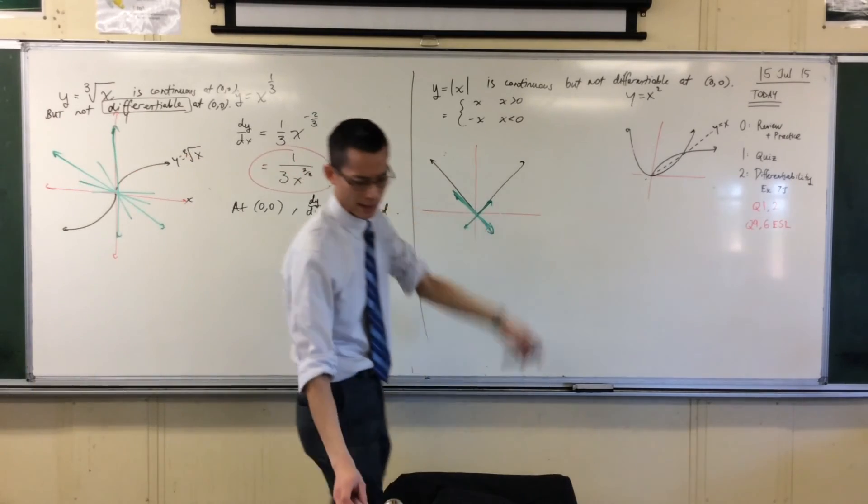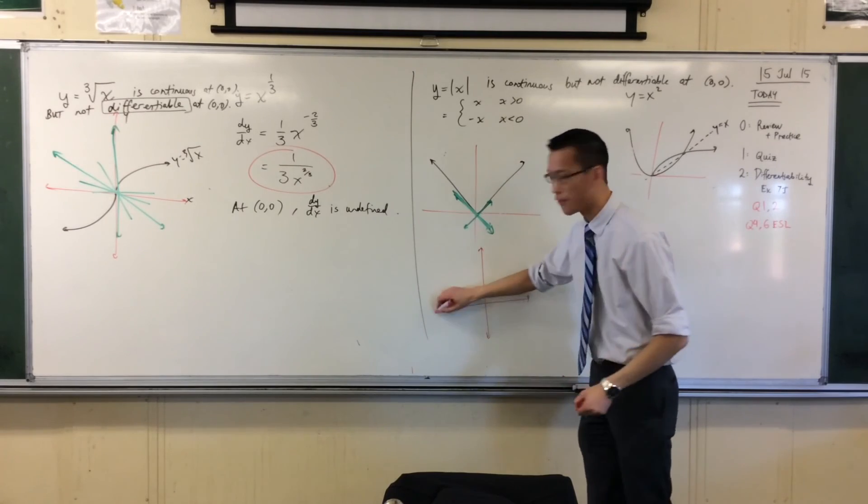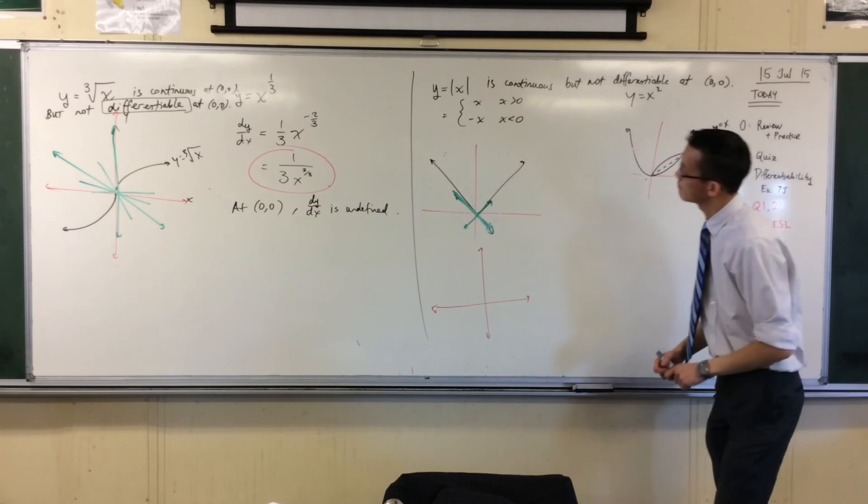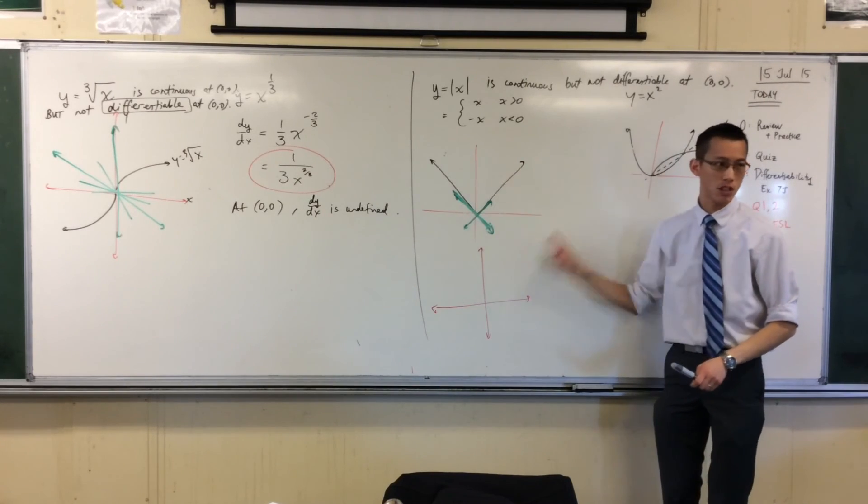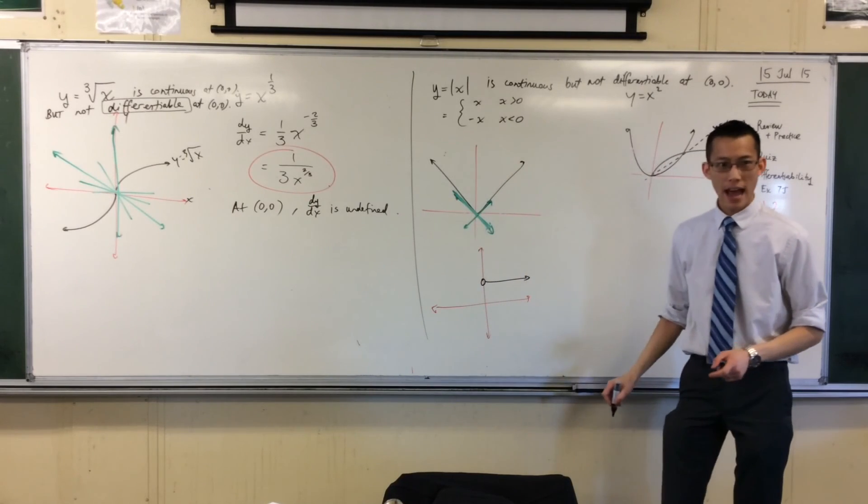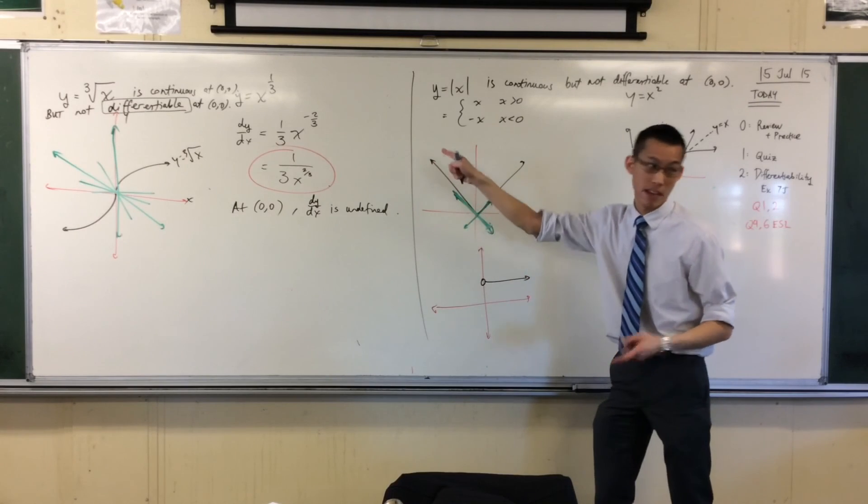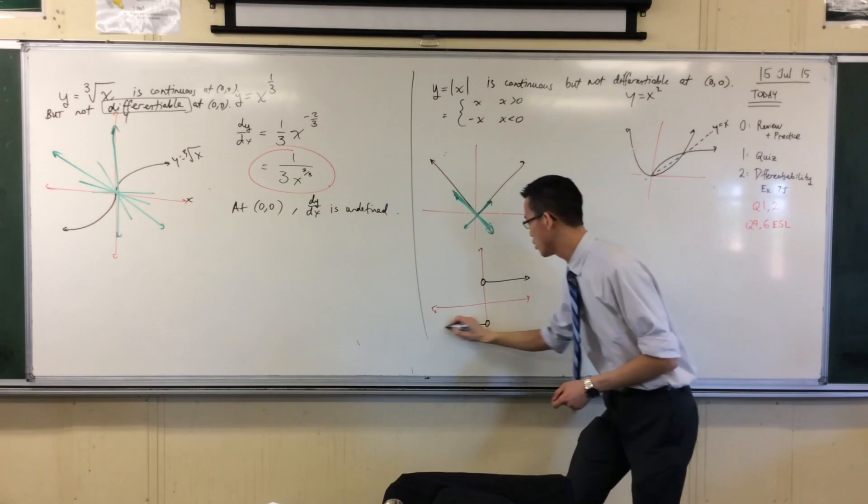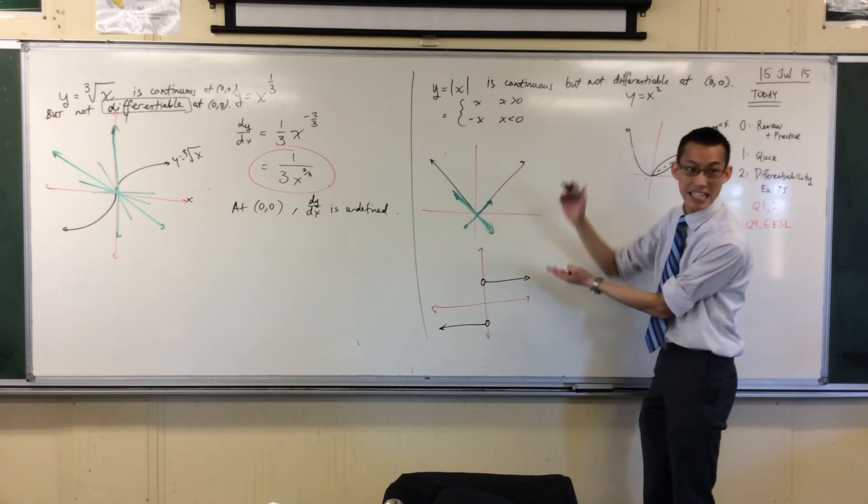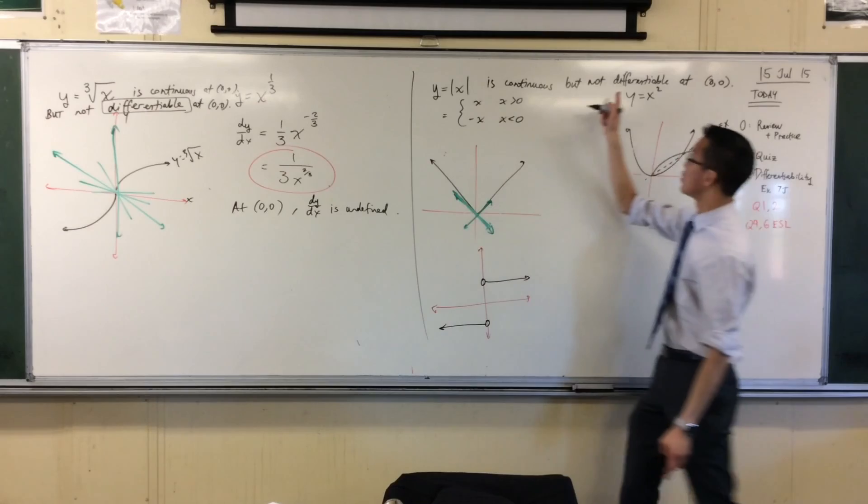Think about what the derivative of this looks like. In fact, I drew it not that long ago. What would the gradient function of the absolute value of x look like? Tell me what it looks like over here. What's the gradient over here? It's one. And then, of course, on the left-hand side, it's negative one. So, can you see here, the gradient function of the absolute value of x is not continuous. Therefore, the actual function is not differentiable.